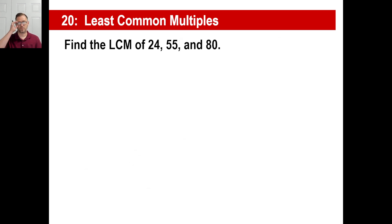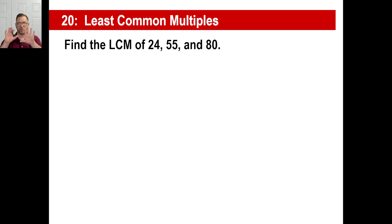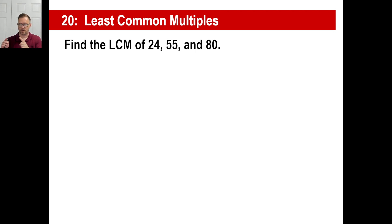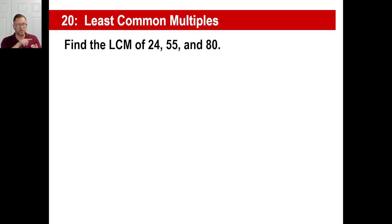Here's another one with three numbers. Find the LCM of 24, 55, and 80. Think about it — imagine all the multiples of 24 in a long line, all the multiples of 55 in another line, then all the multiples of 80: 80, 160, 240, 320... and trying to find the smallest one in all three. Would you like to do that? No. So let's just do the factor trees.